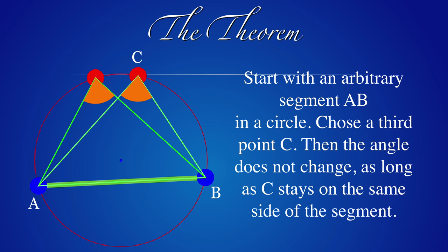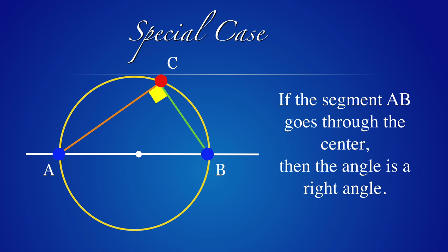We will in class look at the proof and in the homework you will write down a detailed proof. A special case, which is often taught, is rather plain. It tells us that if AB is a diameter, then the angle at C is a right angle. But this is rather obvious if we double the triangle to get a rectangle.